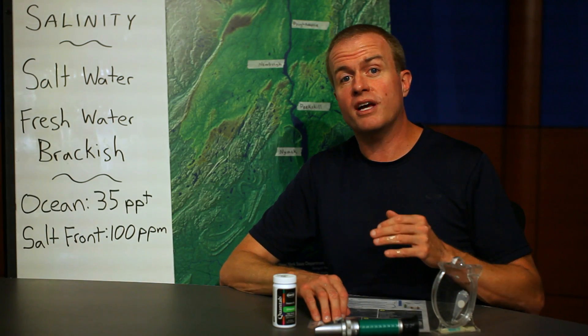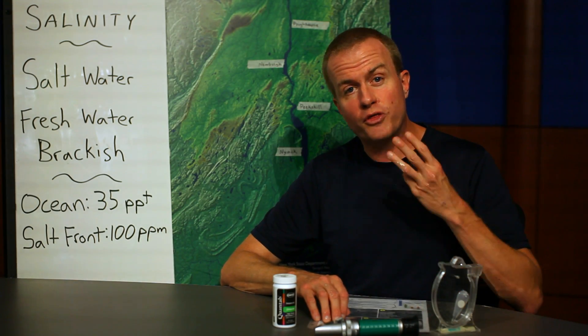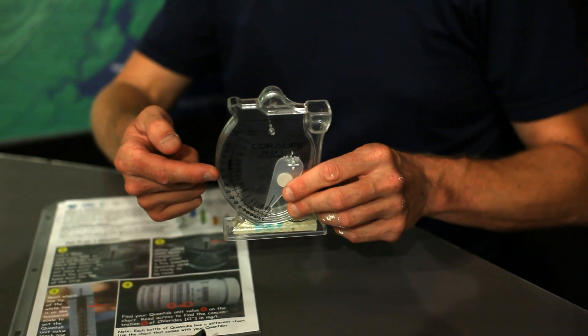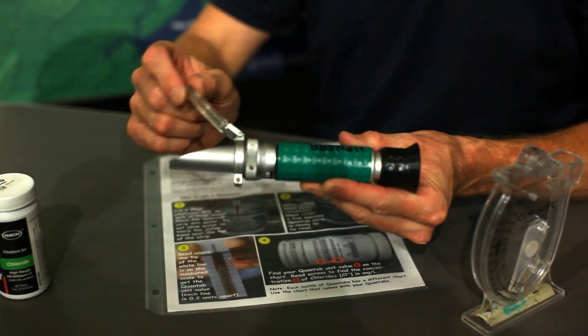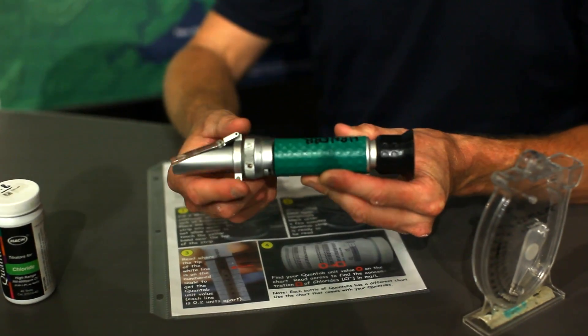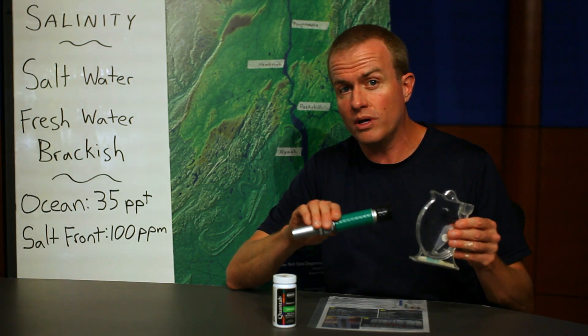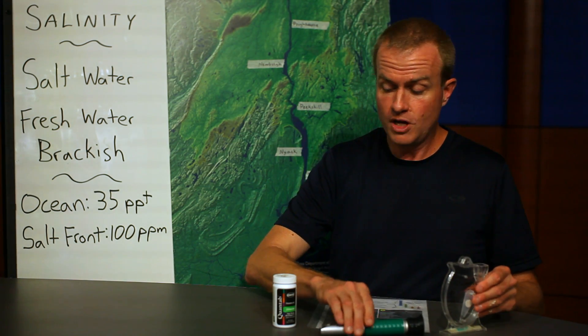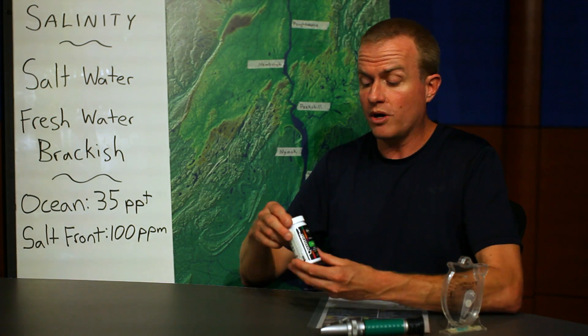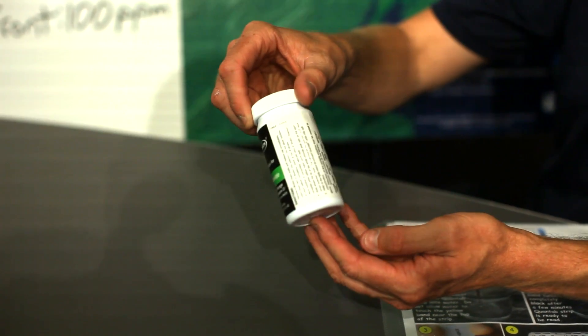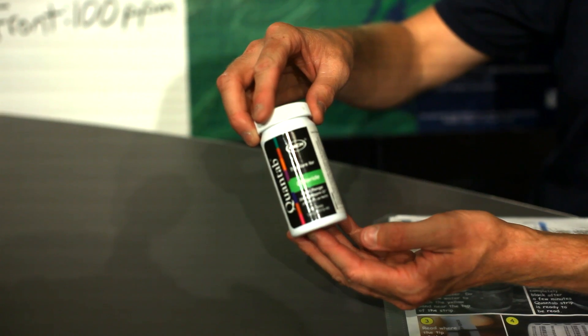My friends and I are going to go over three different methods of measuring salinity. Hydrometers and refractometers are great options for saltwater and brackish water habitats of the lower Hudson and New York Harbor. In freshwater parts of the Hudson, as well as tributaries, I suggest Quantabs.